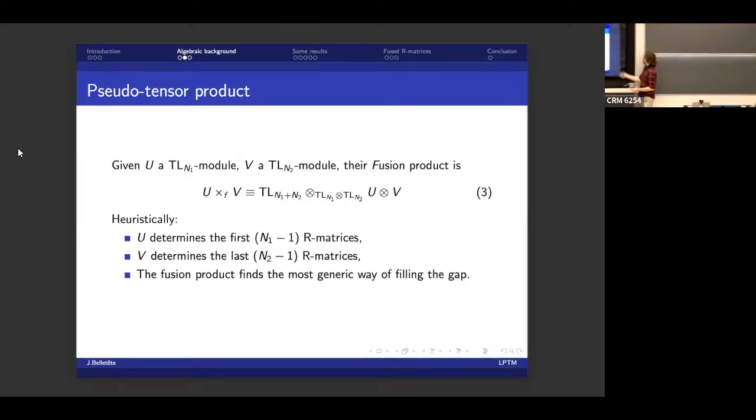Now this structure, it carries over to the modules. So if I take a module U over TL_{N_1}, and a module V over TL_{N_2}, I can define their fusion product as being this thing. And now I know I'm calling this a fusion product, but try to be surprised when I reveal what's the purpose of this construction.